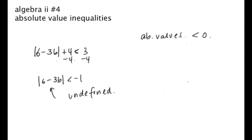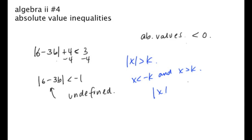So that's it for absolute value inequalities. As a refresher: if the absolute value of something is greater than k, then x is less than negative k and x is greater than positive k. If the absolute value of something is less than k, then negative k is less than x is less than positive k. Those are your rules. Just think about the number line and distance away from 0, and you'll be fine. Thanks for watching.